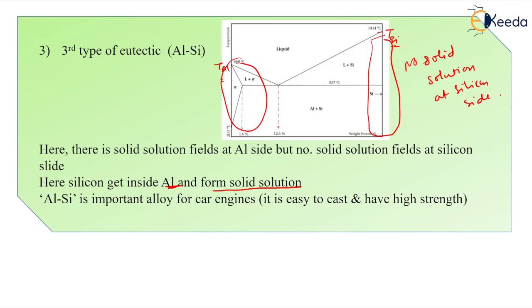This is the third type eutectic system. That is, out of these two elements, only one is having the solid solution and another is not having the solid solution.